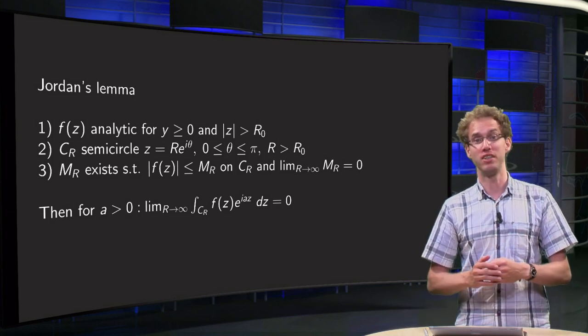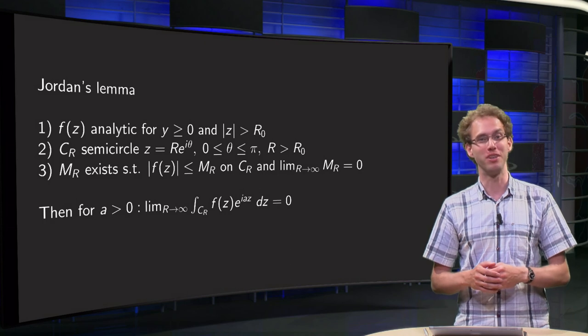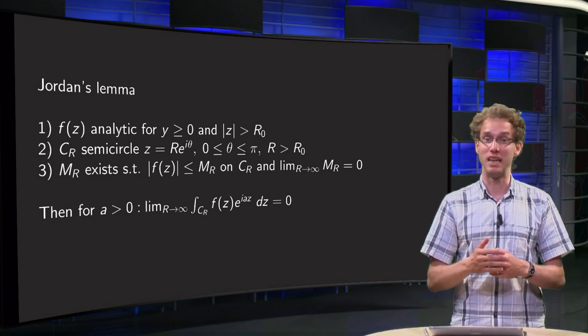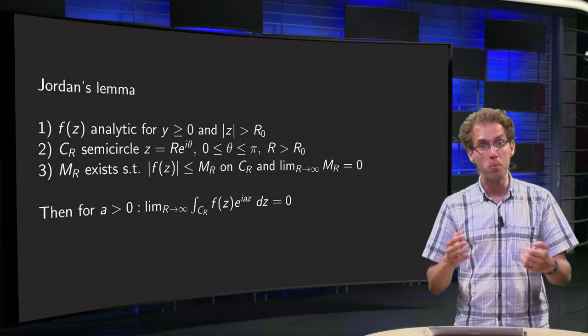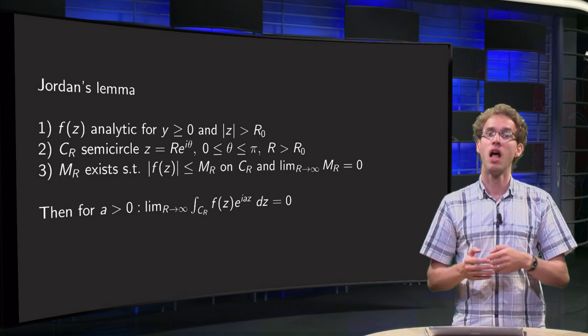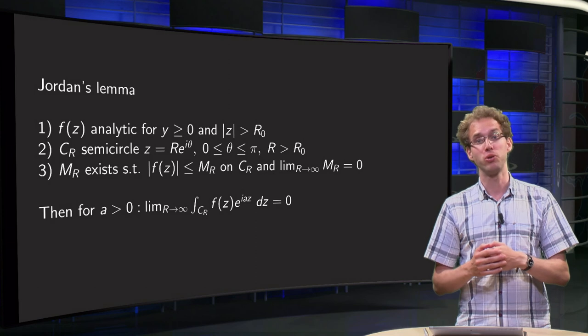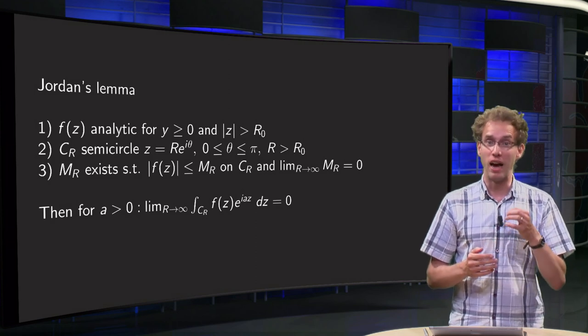When computing Fourier integrals, you often need to compute integrals of the form f(z) times e to the power iωz, where ω is some real number. We can use contour integration in those cases, but we have to be careful.